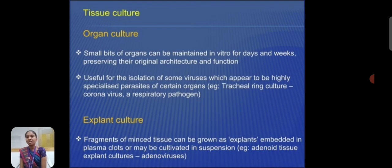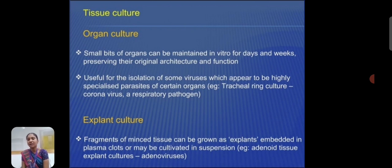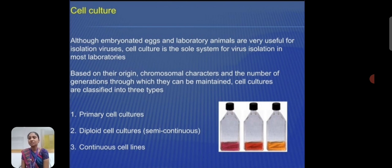Tissue culture. Organ culture: some bits of an organ can be maintained in vitro for days and weeks, preserving the original anatomical function. Used for isolation of viruses which are highly specialized parasites of certain organs. Explant culture: fragments of minced tissue can be grown in explant. Embryonated plasma clots may be cultivated in suspension. It is also used for vaccine production and adenovirus-specific selection. Cell culture: although embryonated egg or laboratory animals are very useful for virus isolation, cell culture is the sole system for virus isolation in most laboratories.